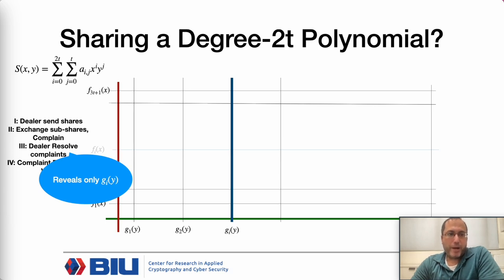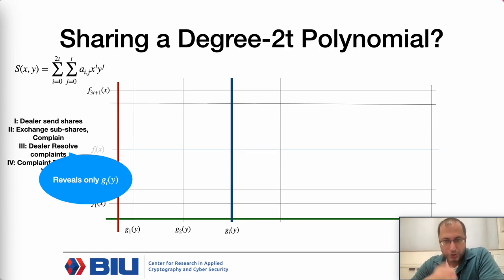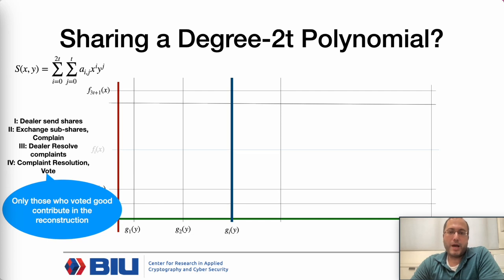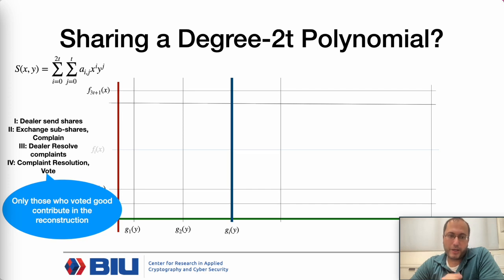This means at the end of the sharing phase for a degree-2t polynomial, there may be honest parties that don't have an f-polynomial—they don't really have a share. During reconstruction we ignore those parties, and only those that voted good contribute to reconstruction.